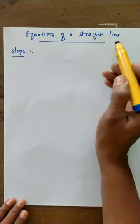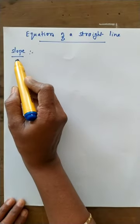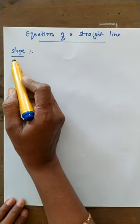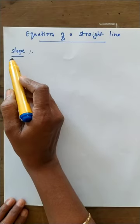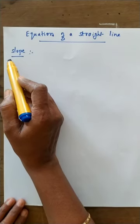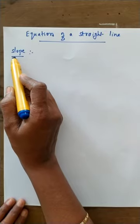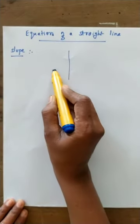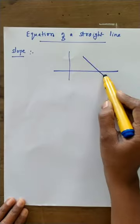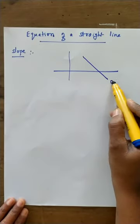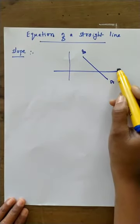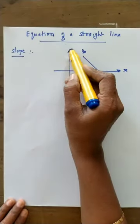Before that, let us recall what is slope. In the last video we studied slope — its definition, formula and all that. So here, take straight line AB. AB is a straight line; this is the x-axis and this is the y-axis.